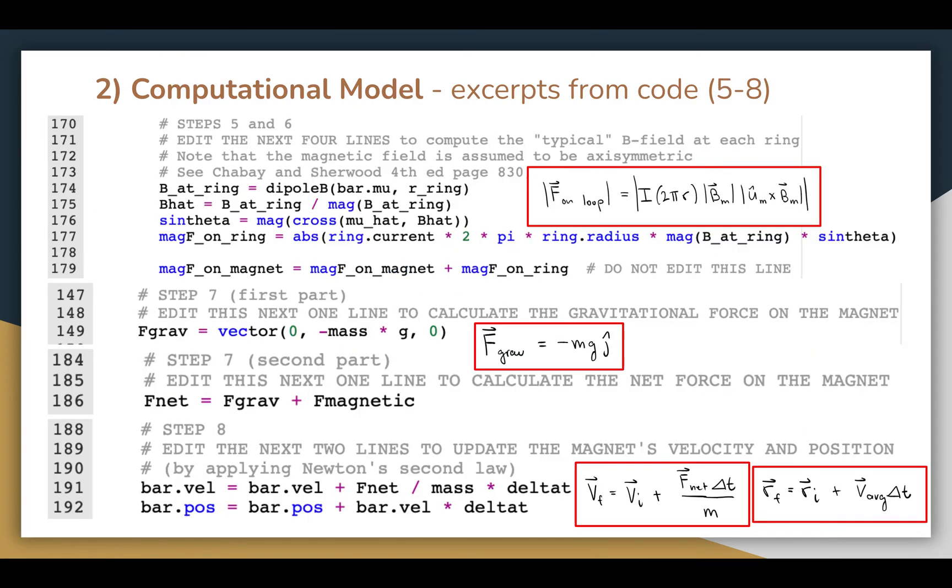In steps 5 and 6, I calculate the force by the induced current on the falling magnet using the formula shown to the right, and in step 7, I calculate the force due to gravity as well as the net force, which takes into account the force due to gravity and the force due to the induced current. Finally, in step 8, I apply the momentum principle to iteratively update the position and velocity of the magnet as it falls through the tube. The formulae for both these steps are also shown.